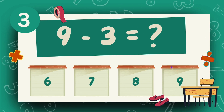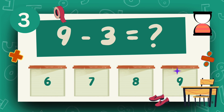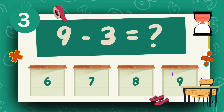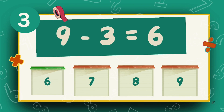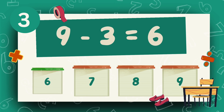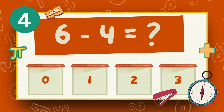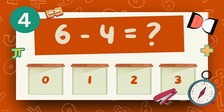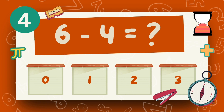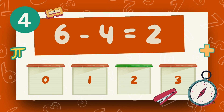What is nine minus three? The answer is six. What is six minus four? The answer is two.